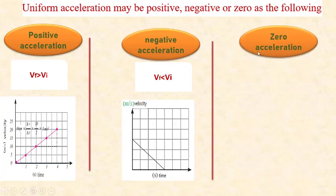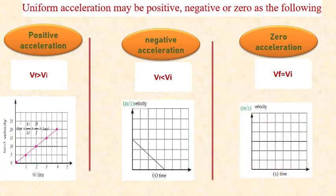Zero acceleration means the object moves with uniform speed or velocity. An object that moves with uniform speed has no acceleration because uniform velocity is constant velocity. So final velocity equals initial velocity, and the acceleration will be zero. A horizontal parallel line on the graph represents zero acceleration.